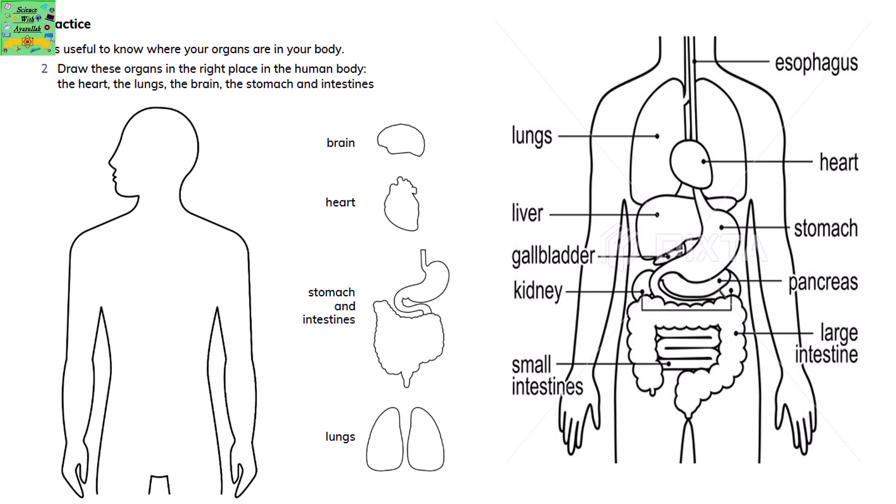It is useful to know where your organs are in your body. Draw these organs in the right place in the human body: the heart, lungs, brain, the stomach and intestines.